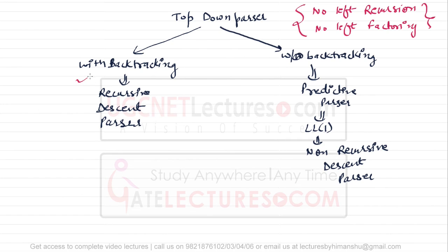The top-down parser with backtracking is called the Recursive Descent Parser. The top-down parser without backtracking is called the Predictive Parser, and an example of that is the LL(1) parser, which is a non-recursive descent parser. We'll start with a simple example of the recursive descent parser and then look at the predictive or LL(1) parser.